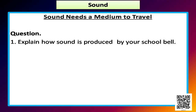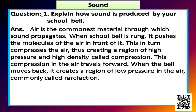Let us discuss the questions given on page 163. Question 1: Explain how sound is produced by your school bell. When the school bell is rung, it pushes the molecules of the air in front of it. This in turn compresses the air, creating a region of high pressure and high density called compression. This compression in the air travels forward. When the bell moves back, it creates a region of low pressure, commonly called rarefaction.